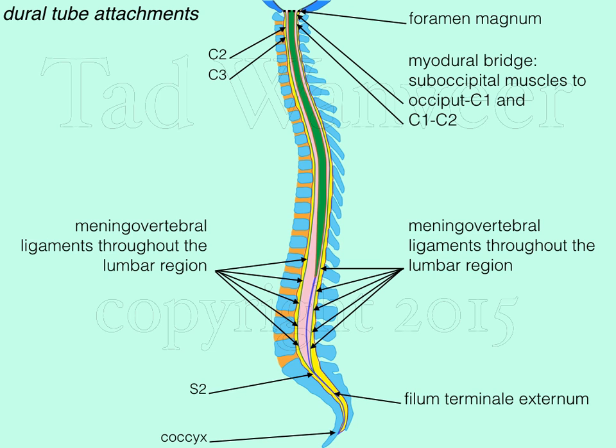The attachments of the dural tube to the foramen magnum, S2, and coccyx are called firm dural tube attachments. The attachments at C2, C3, C1-C2, and through the lumbar area are called loose ligamentous attachments, which help to support the dural tube within the spinal canal while also allowing it slight independence and motion within the canal.